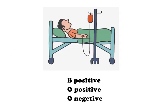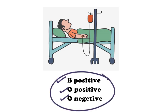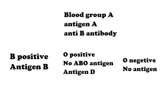Now let's look at the case from earlier in the video. A patient needs A negative blood, and you have B positive, O positive, and O negative blood in stock. You need to choose one of these three types. From Landsteiner's law, we know that a person with blood group A has Antigen A and anti-B antibody. So if we transfuse B positive blood into the patient, the RBCs of the transfused blood will be clumped by antigen-antibody reaction.